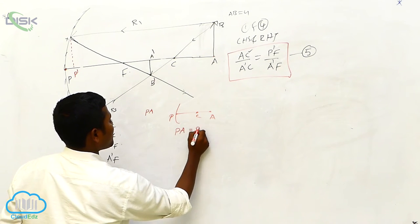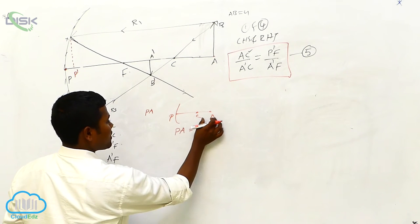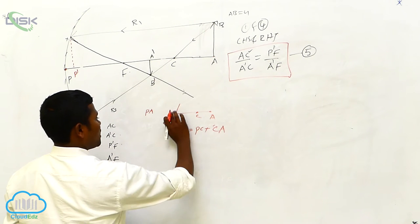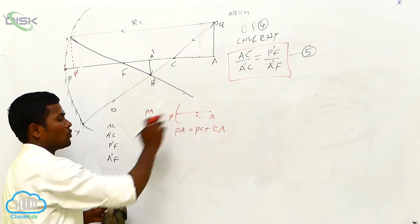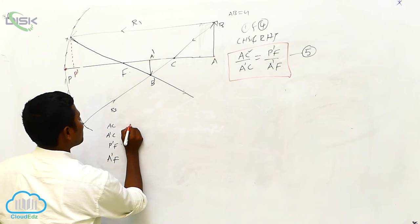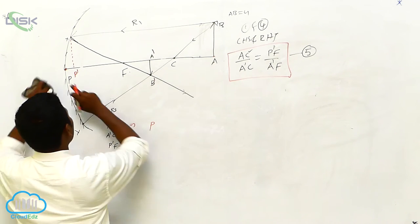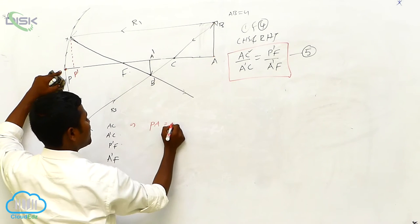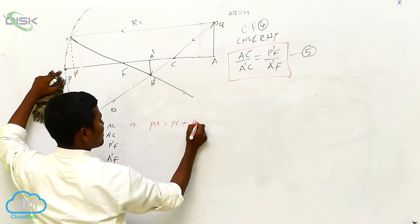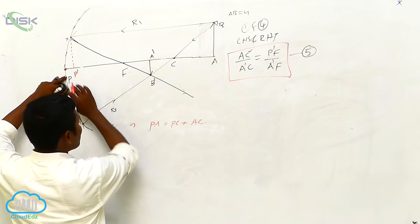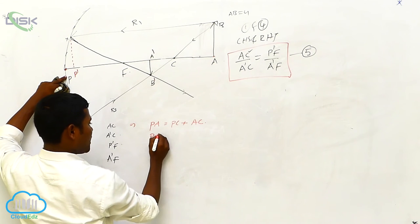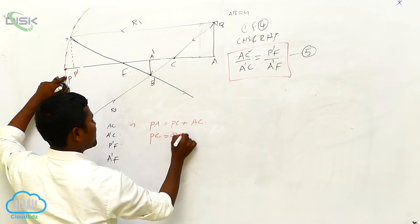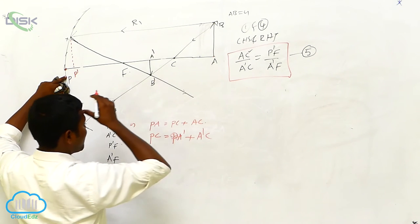Listen carefully. PA is equal to PC plus CA — if you want total distance, this distance and this distance, then we can get the total distance. Next: PC is equal to PA dash plus A dash C. These are the three equations. PA dash is equal to PF plus F A dash.